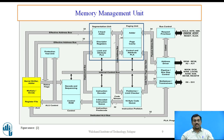Segments are used to hold code, data, and stack for a program and to hold system data structures. Each program running on a processor is assigned its own set of segments, and the processor enforces the limits between segments to ensure that one program does not interfere with the execution of another. The segmentation unit provides a 4-level protection mechanism for protecting and isolating system code and data from those of the application program. Paging provides a mechanism for implementing a conventional demand-based virtual memory system where sections of a program's execution environment are mapped into physical memory as needed. Paging can also be used to provide isolation between multiple tasks.